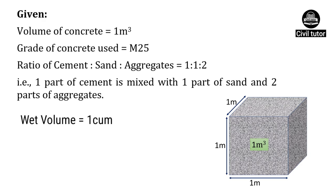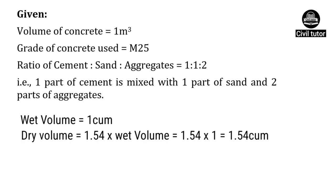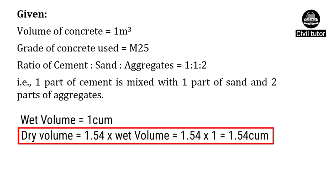We need to convert this wet volume to dry volume to know the exact quantity of materials. To convert the wet volume to dry volume, we need to multiply it by a conversion factor of 1.54. Hence, dry volume will be equal to 1.54 into wet volume, which is 1 meter cube, giving a dry volume of 1.54 meter cube.